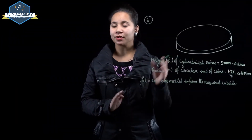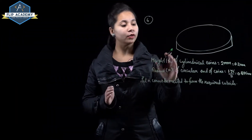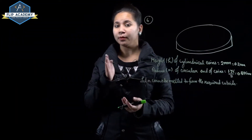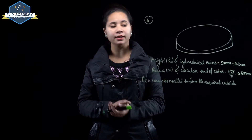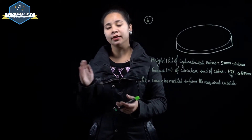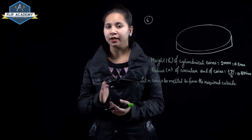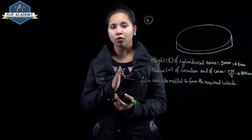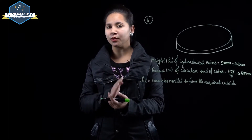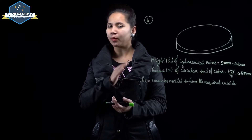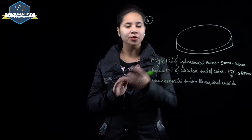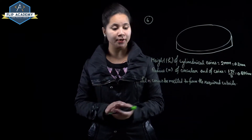Given: height of the cylindrical coin = 2 mm. Convert to cm: 1 mm = 1/10 cm, so thickness = 0.2 cm.